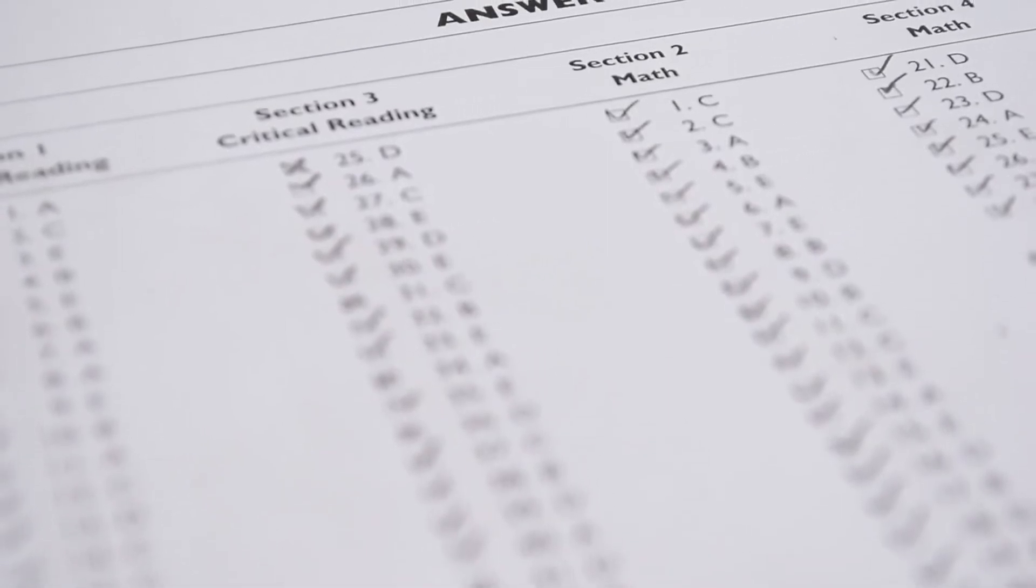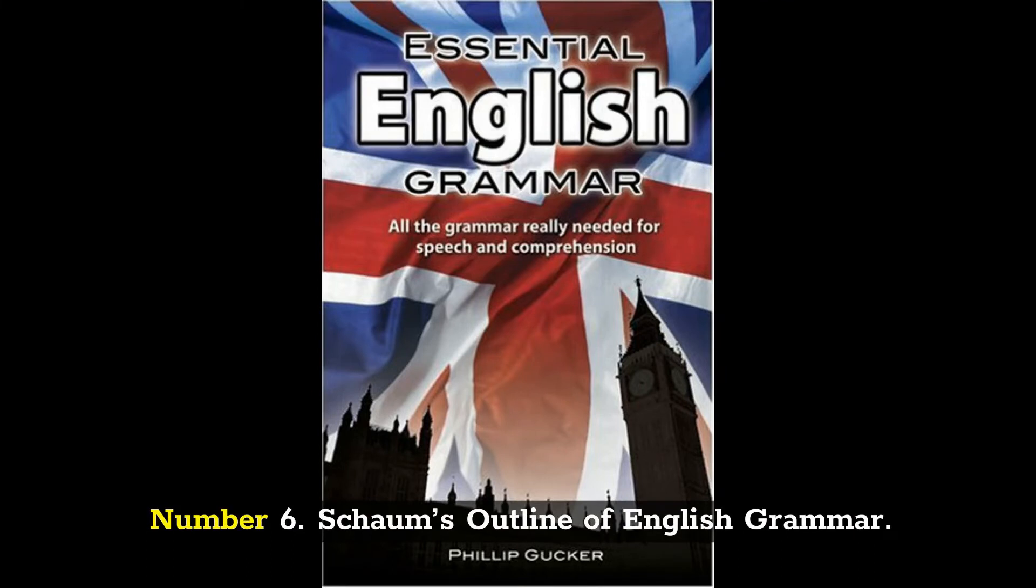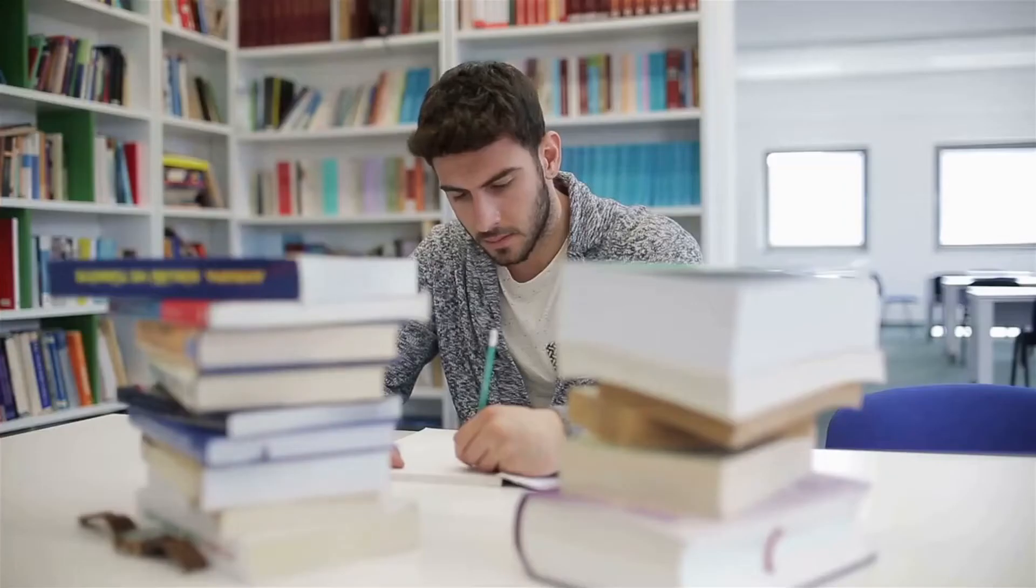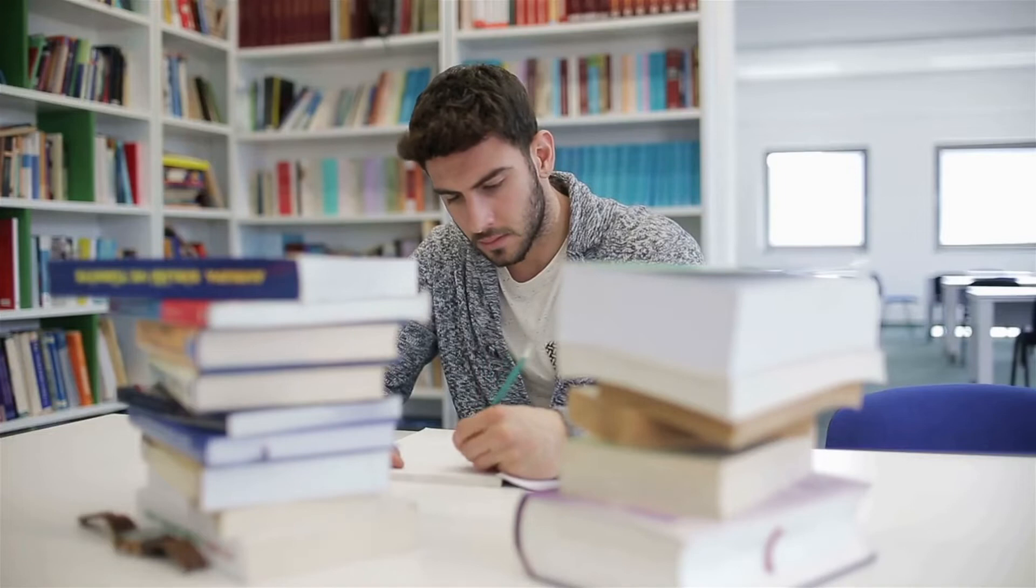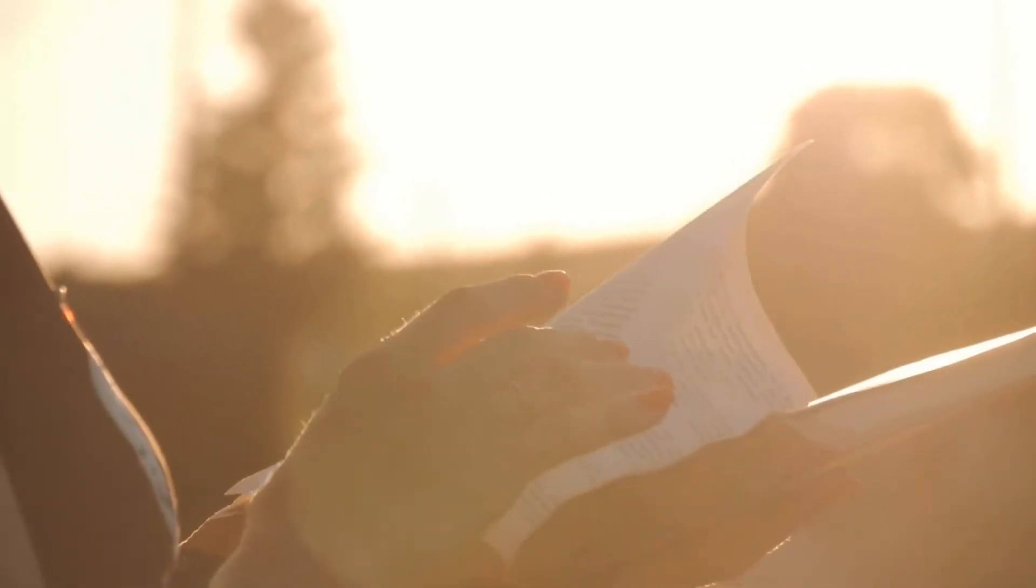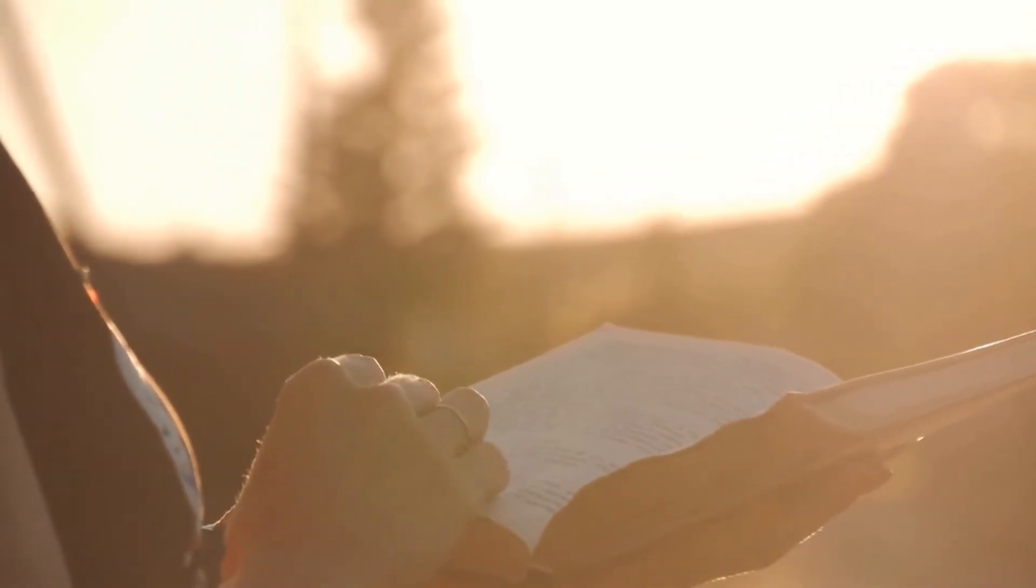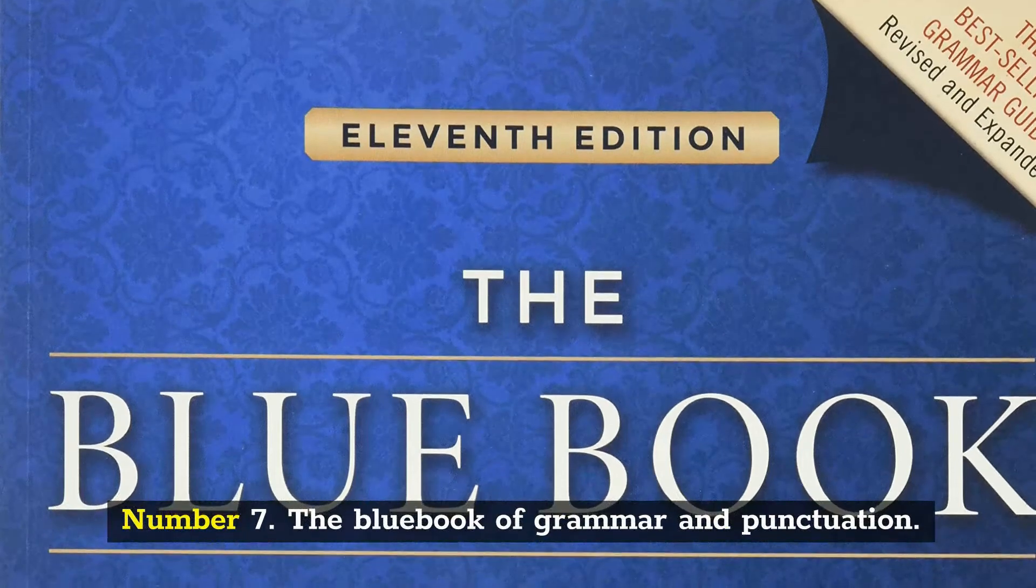Number six: Schaum's Outline of English Grammar. Students who prefer more conventional approaches to education and who can retain grammatical concepts without the use of visual aids or imaginative exercises can benefit from reading this book by Eugene Ehrlich.